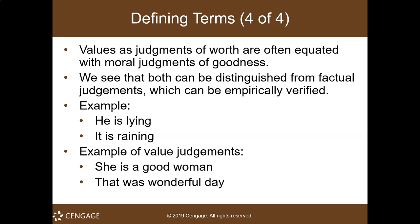Values as judgments of worth are often equated with moral judgments of goodness, and both can be distinguished from factual judgments, which can be empirically verified. For example, factual judgments: 'He's lying' or 'It is raining.' Value judgments: 'She's a good woman' or 'That was a wonderful day.'